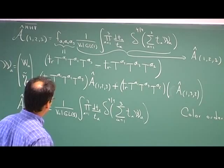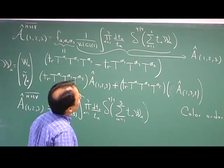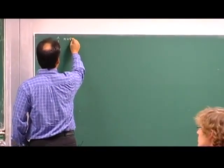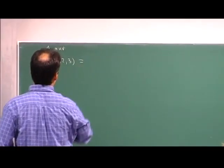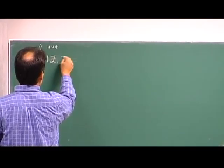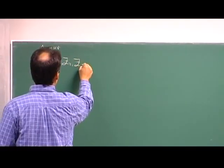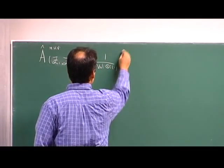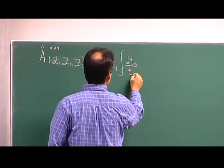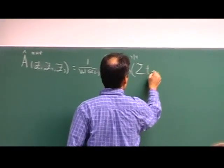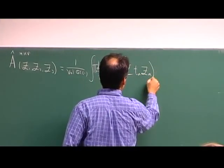So this is very good. On this blackboard we can write the color-ordered MHV-bar amplitude. In fact, that should be more precise, so I should write it like this.